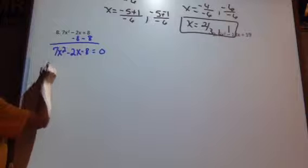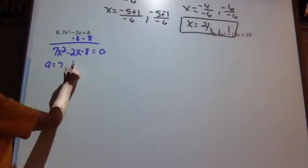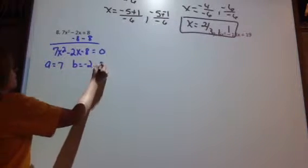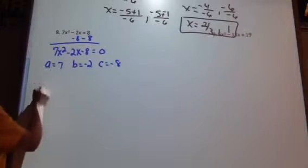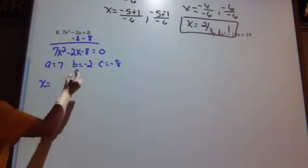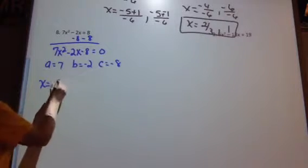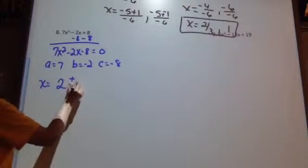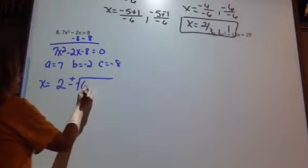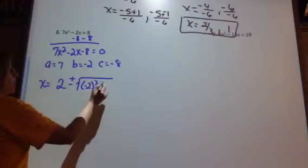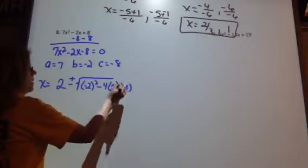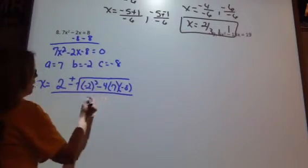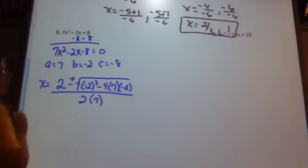Then we need to identify our A, B, and C. And then we're going to substitute into the quadratic formula. Opposite of B, B is negative 2, so the opposite is positive 2. B squared minus 4 times A times C all over 2 times A.